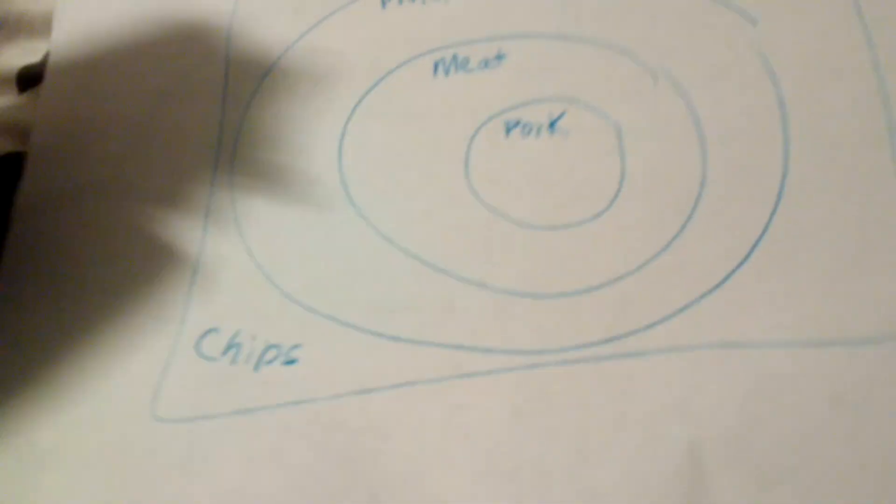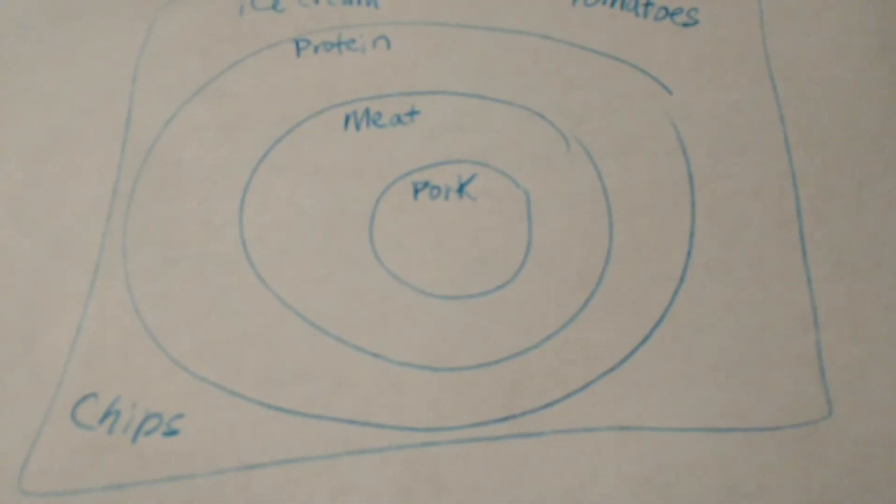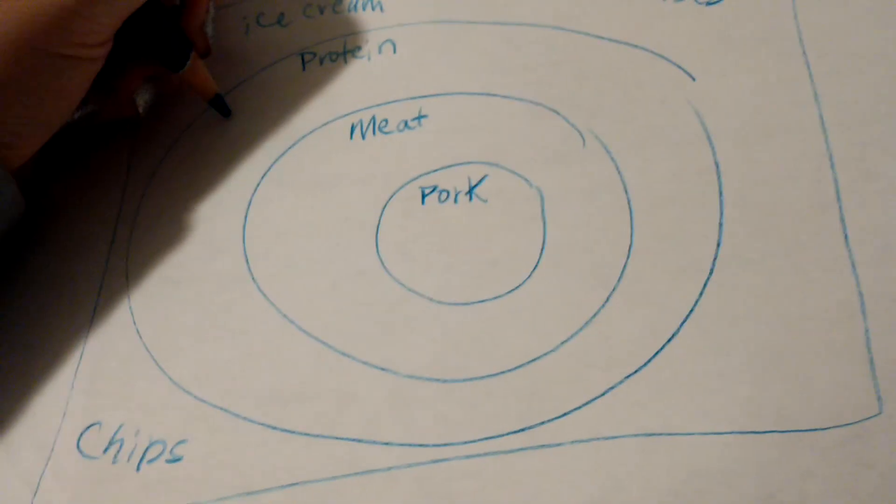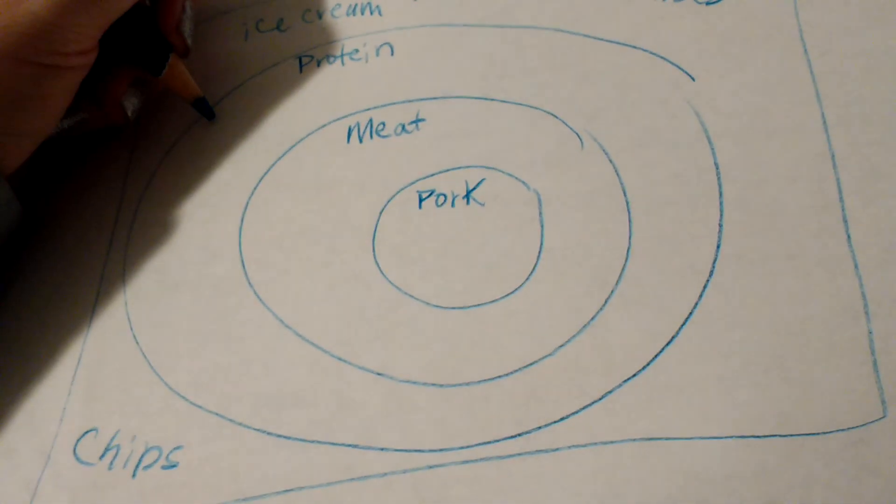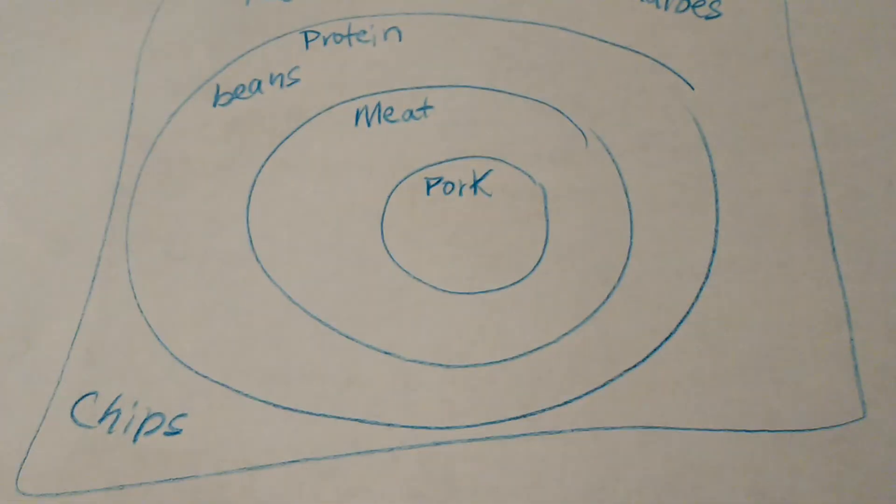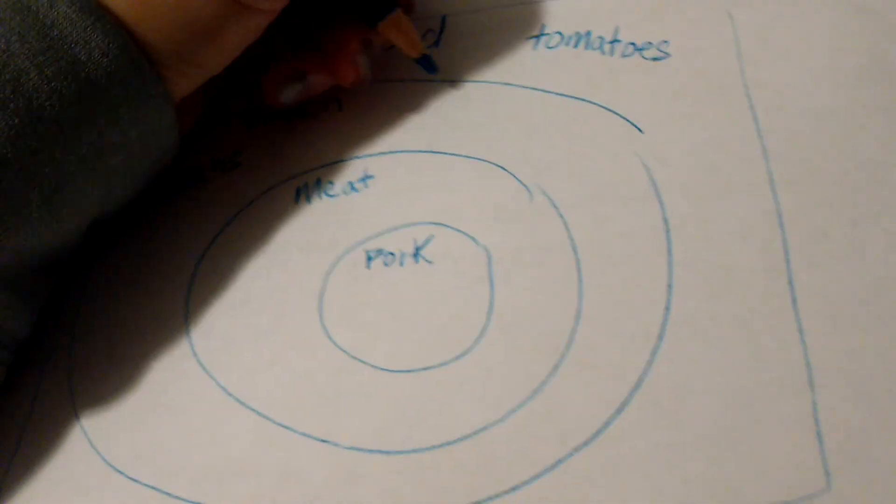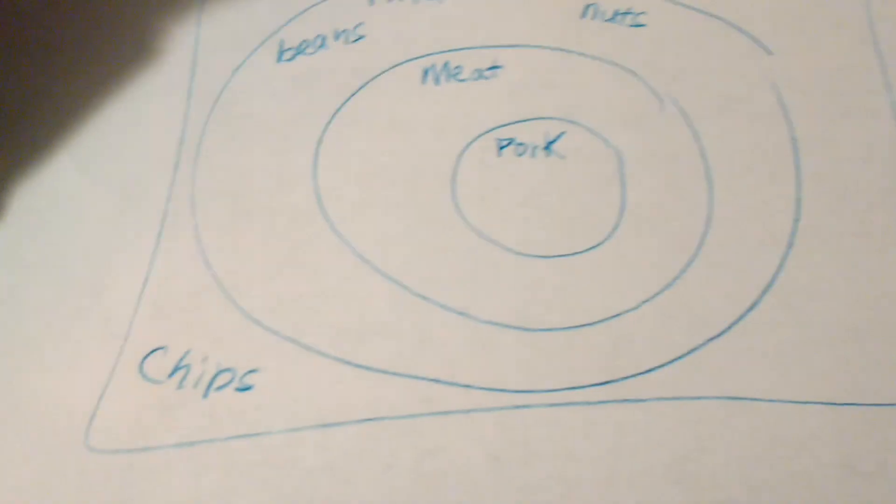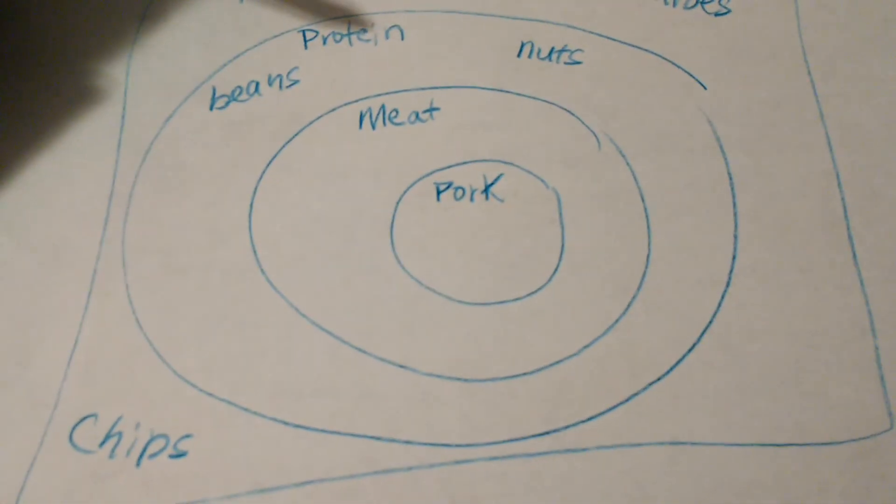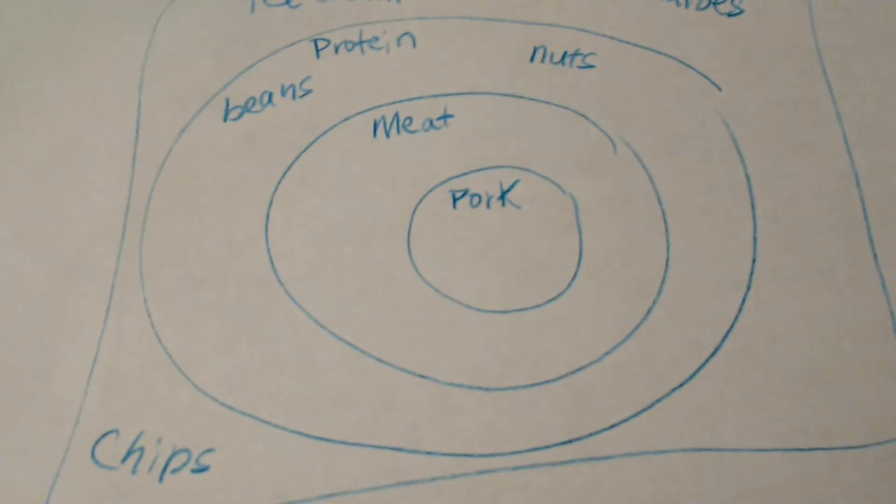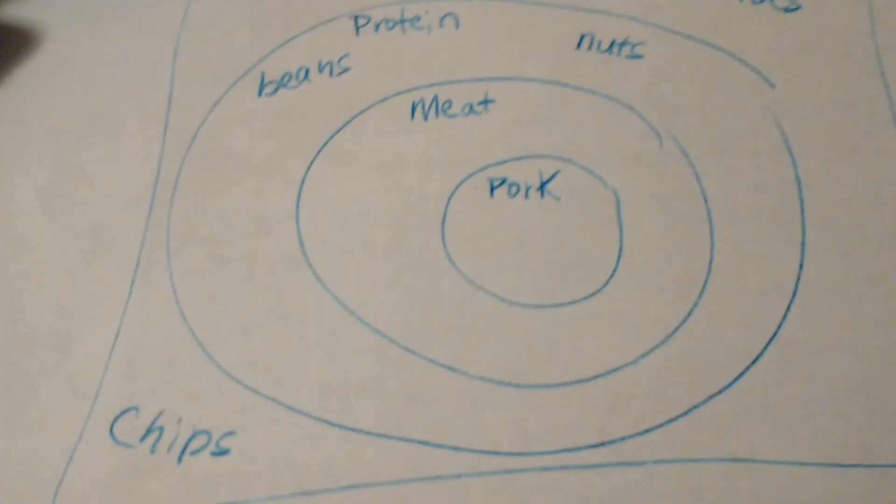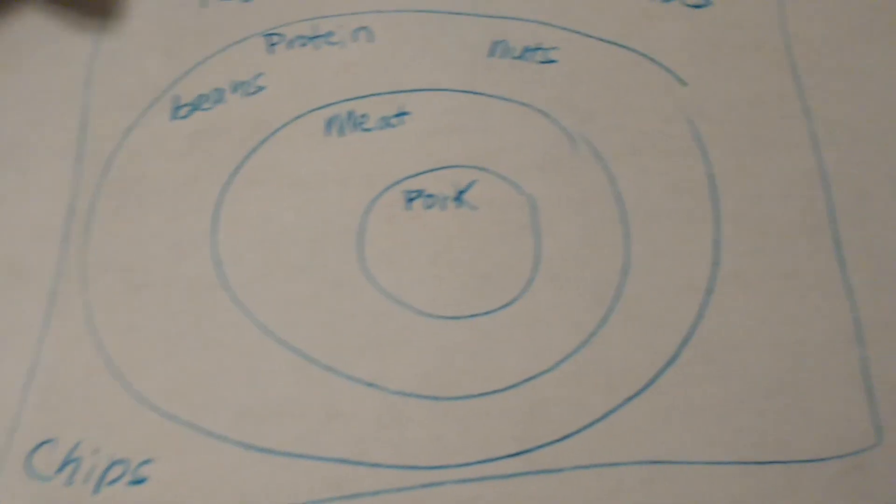And then things that would work for protein, but we're not at meat yet, would be things like beans, and maybe even peanuts or something like that, or other things that would go there, like protein shakes or other things. Cheese to some extent is a protein, but it's also kind of considered part of the fats.